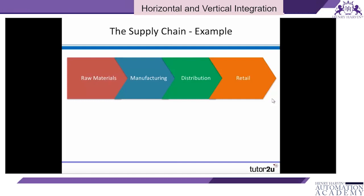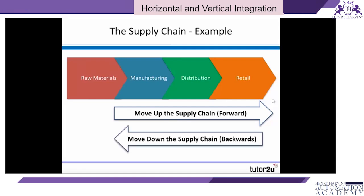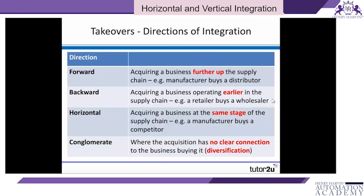In terms of integration, a business may decide to move up the supply chain — forward — or down the supply chain — backwards. In terms of forward integration, we're looking at moving forward through the supply chain, for example a manufacturer deciding to buy a distributor of its products. A business can also move backwards — backward integration — involving a business moving earlier in the supply chain.